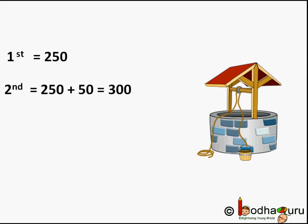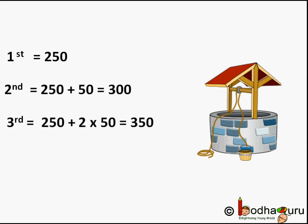The cost of digging the first meter is 250 rupees. The cost of digging the second meter will be 250 plus 50. The cost of digging the third meter will be 250 plus 2 times 50. The cost of digging the fourth meter will be 250 plus 3 times 50. Now we can tell it's an arithmetic progression.